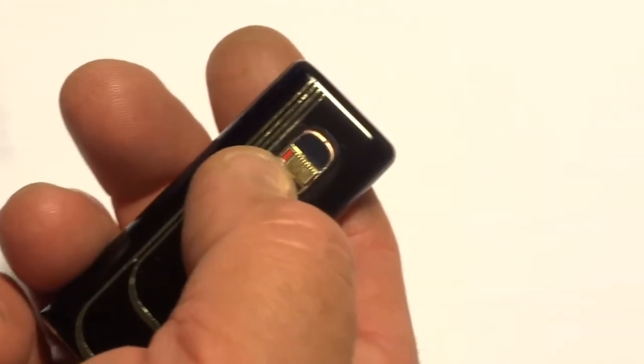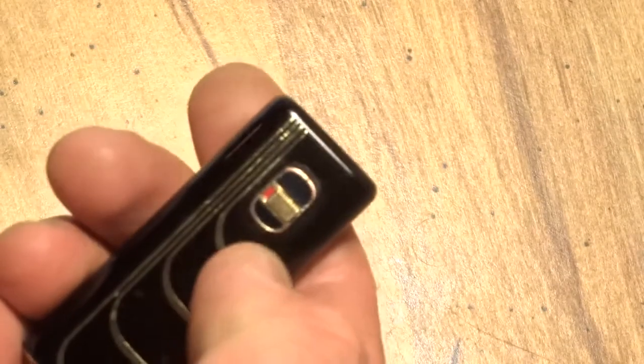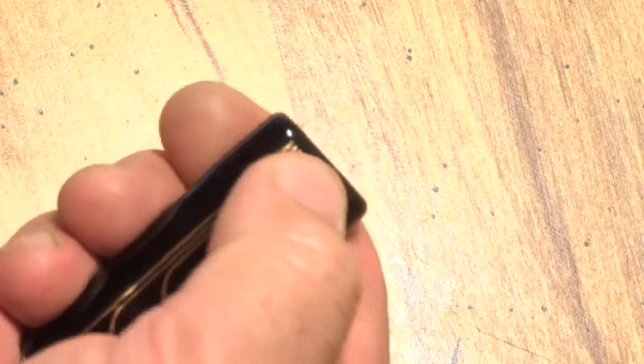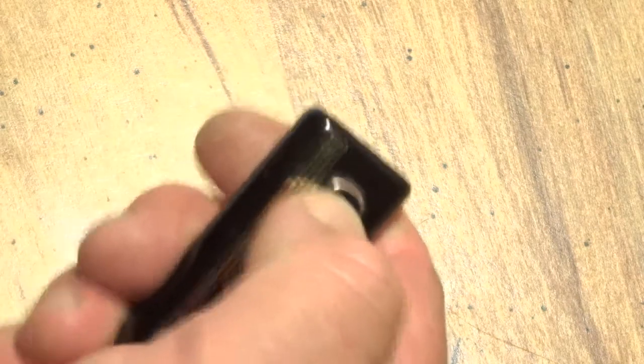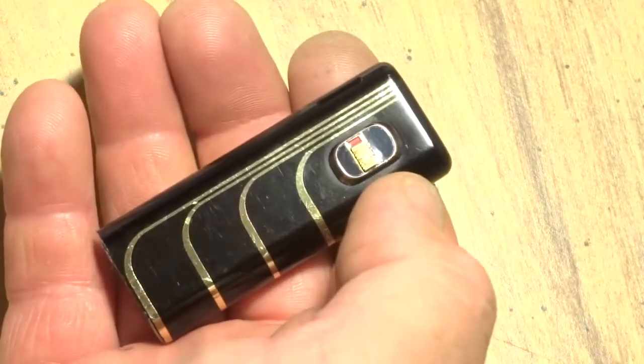This little red indicator here means it's ready to fire. You can lock it by pushing it over that way, and that way you can't accidentally light it. It's got a little locking mechanism on it. It's kind of cool.